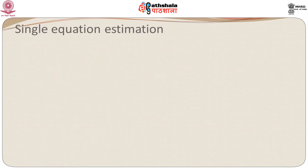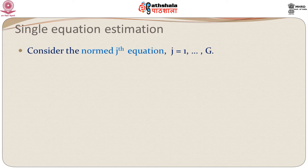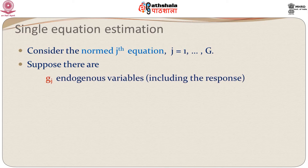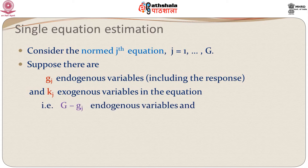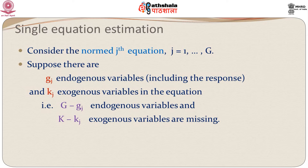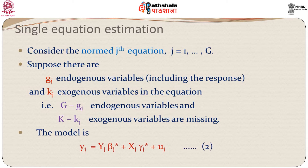We will start with the single equation estimation method, looking at equations one by one — specifically the j-th equation, assuming it is normed. Suppose there are G_j endogenous variables including the response and K_j exogenous variables in the j-th equation. We can write the model as y_j equals Y_j beta_j* plus x_j gamma_j* plus u_j.